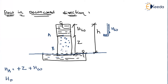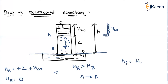For point B, since point B and the reference axis are at the same level, the elevation head is zero. The piezometer at B rises to the tail water level, which is also at the reference axis, so the total head at B is zero. Since the head at A is greater than the head at B, flow occurs from A to B — that is, in the downward direction. The head loss HF equals the head at A minus the head at B, which gives HW plus Z.